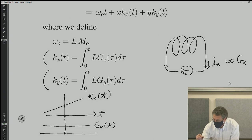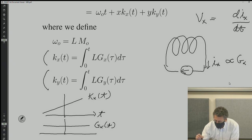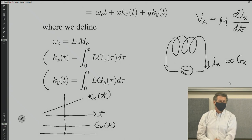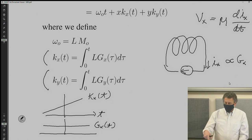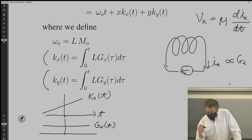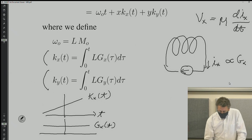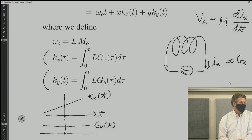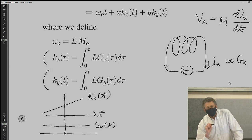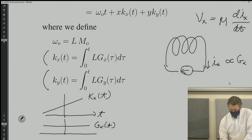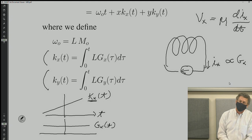The voltage is equal to the time derivative of the current times the inductance L. So the coil will have some inductance — coils naturally have a lot of inductance. The voltage will be the derivative of the current. kx is the integral of the gradient, which means the current is the integral of the voltage. So kx will be the second integral of the voltage. The analogy is that the voltage is like the acceleration for kx.